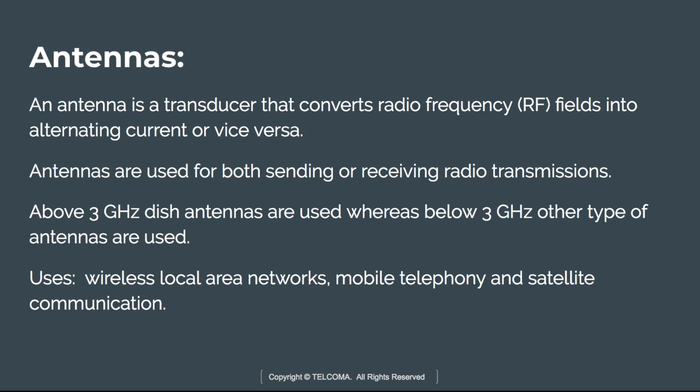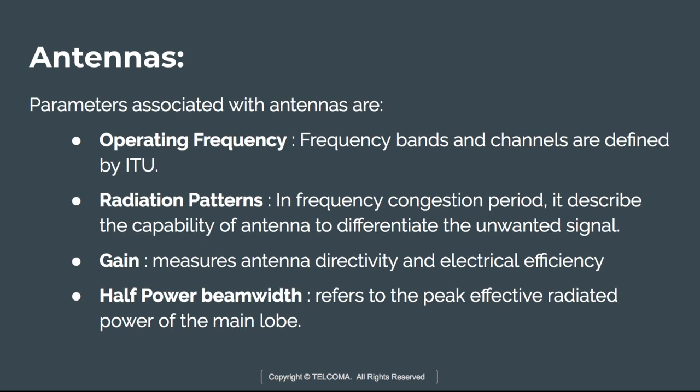Uses of antennas include wireless local area networks, mobile telephony, and satellite communication. Above three gigahertz, dish antennas are used, whereas below three gigahertz other types of antennas are used. The parameters associated with antennas include, first of all, the operating frequency — the frequency on which the antenna will operate. Frequency bands and channels are defined by the ITU.